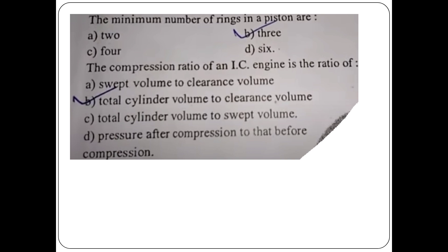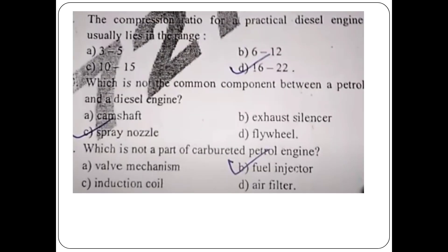The compression ratio of an IC engine is the ratio of — what is the compression ratio of IC engine? For diesel engines, the compression ratio lies in the range of 16 to 22.